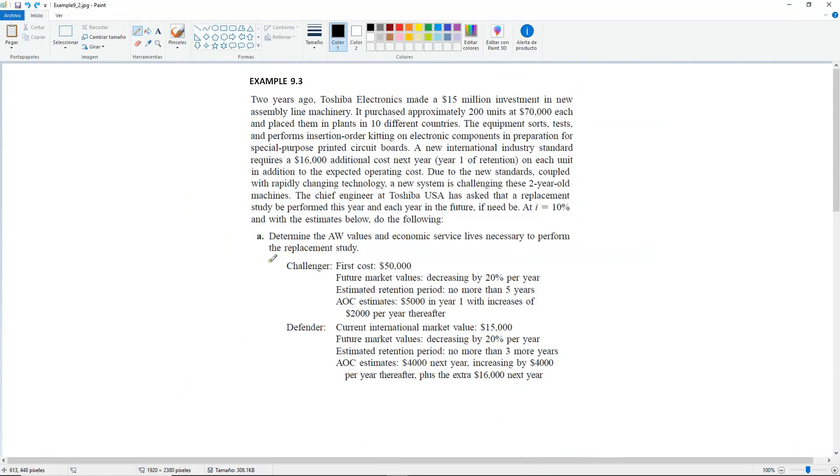There are some steps that we must follow when we are not given a study period, which is this branch. And even before we start with number one, they're asking us that we must find the ESL and the annual worth values for both the challenger and the defender, as I mentioned in the previous slide. So that's exactly what part A is asking us to compute. Let's see what we have here. First of all, yes, they're talking about a $15 million investment, but note that this was done two years ago because this is the defender. So this is the current system.